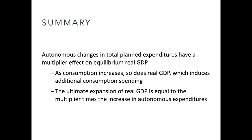In summary, autonomous changes in total planned expenditures have a multiplier effect on the equilibrium of GDP. As consumption increases, so does real GDP, which includes additional consumption spending. The ultimate expansion of real GDP is equal to the multiplier times the increase in autonomous expenditures.